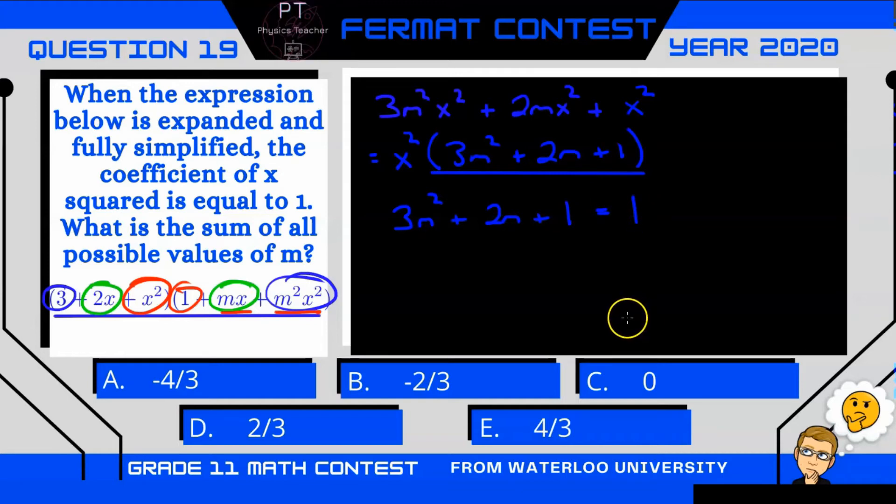So what are all the possible values of m? Well, if I subtract 1 from both sides of the equation, I get 3m squared plus 2m is equal to 0. So now I can factor out an m, and we're left with m times 3m plus 2 equals 0.